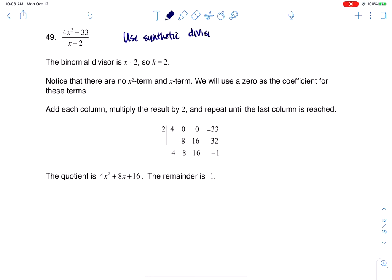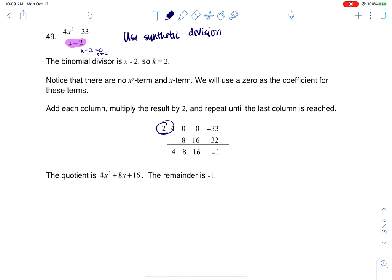I personally would have used synthetic division even if the directions hadn't said it, because that lead coefficient on that denominator is 1. This is basically 1x minus 2, and any time that lead coefficient is 1, I'm good with using synthetic division. Because I have this binomial of x minus 2, if you set that to 0 you get x equaling 2, so that's the number that goes on the outside of this synthetic division setup.